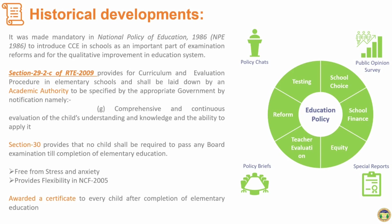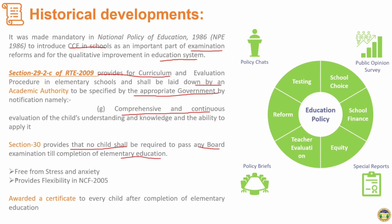Ab iske historical development ki baare hum baat karenge. It was made mandatory in the National Policy of Education of 1986 to introduce CCE in schools as an important part of examination reform and for the qualitative improvement in education system. Section 29 of RTE 2009 provides for curriculum and evaluation procedure in elementary schools, specifying comprehensive and continuous evaluation of child's understanding, knowledge, and the ability to apply it. Section 30 provides that no child shall be required to pass any board examination till completion of elementary education, should be free from stress and anxiety, with flexibility in NCF 2005, and the child will be awarded a certificate after the completion of elementary education.